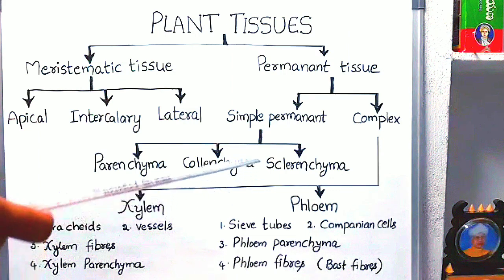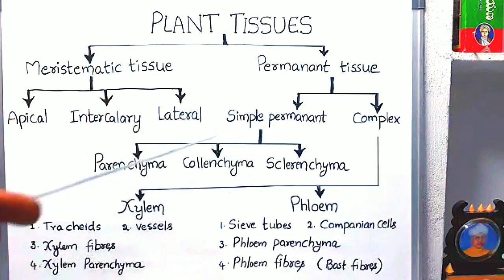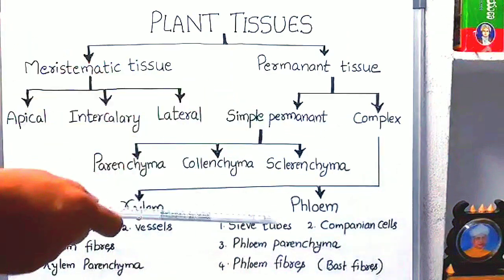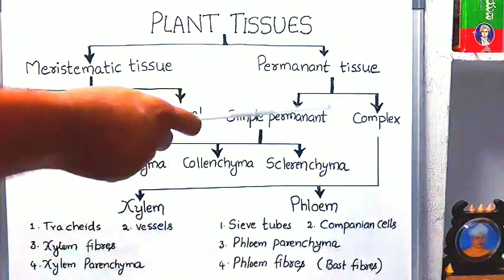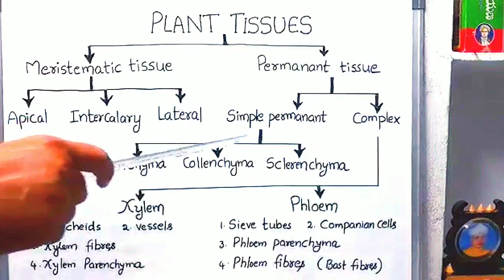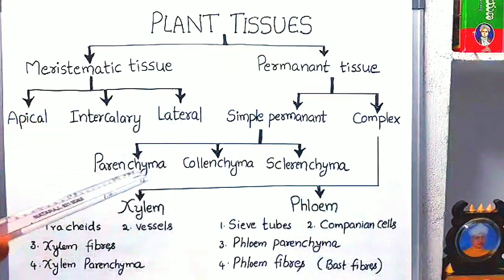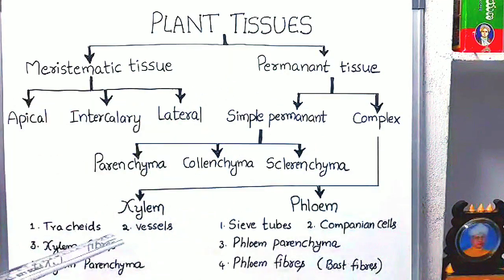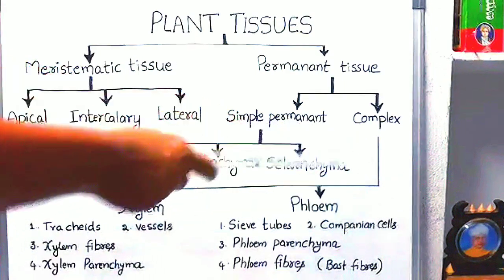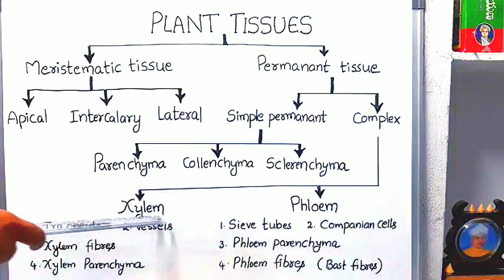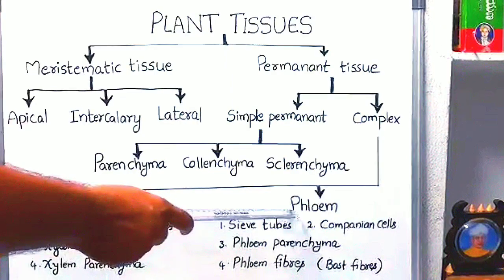In complex permanent tissues, more than one type of cells are present and they work together as a unit. Complex tissues consist of more than one type of cells which work together as a unit. Complex tissues are of two types: xylem and phloem.